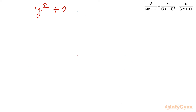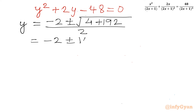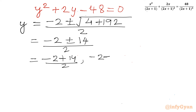Let us solve this quadratic first: y² + 2y - 48 = 0. Using the quadratic formula, y = (−2 ± √(4 + 192)) / 2 = (−2 ± √196) / 2 = (−2 ± 14) / 2. With the plus sign: 12/2 = 6. With the minus sign: −16/2 = −8. So y = 6 or y = −8.